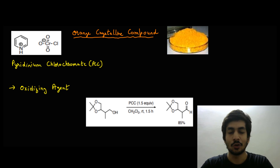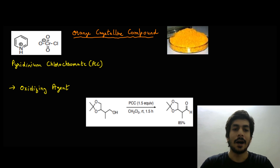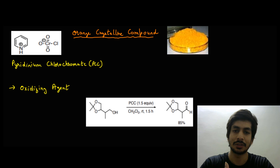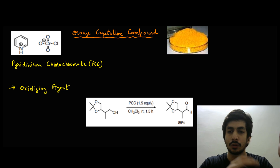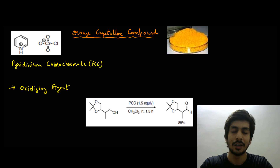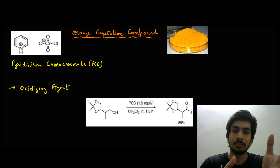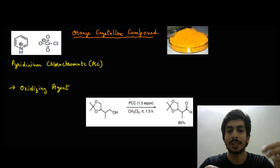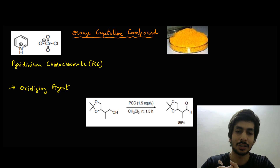Welcome to another video on reagent chemistry. In this video, we are going to talk about pyridinium chlorochromate (PCC), which is an oxidizing agent. It has several advantages over its predecessors like Collins' reagent and Jones' reagent. Jones' reagent is not very selective, and Collins' reagent is quite hygroscopic — meaning it tends to absorb water from the environment. PCC, by contrast, is not hygroscopic and is very selective in its oxidation.